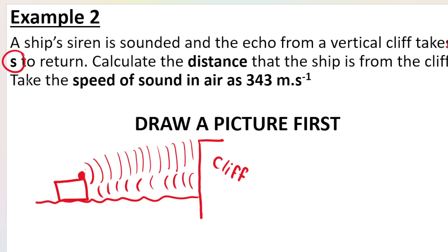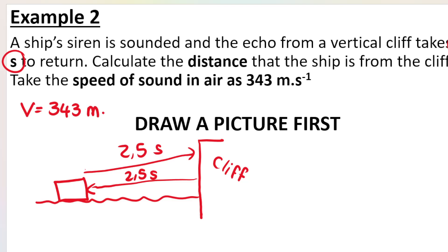If it takes five seconds to return, that means it took five seconds to go that way and back. So how long did the sound waves take to travel in one direction? The sound waves took 2.5 seconds to travel in one direction and 2.5 seconds to travel back. That's important. We know the speed of sound in air. So v is 343 meters per second. That's the speed of sound in air. And they want the distance that the ship is from the cliff.